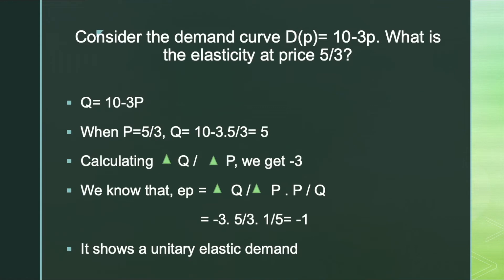Now let's move on to another question. Consider the demand curve QD = 10 minus 3P. What is the elasticity at price 5/3? Here QD is quantity demanded. We can find the quantity demanded: Q = 10 minus 3 × (5/3), which equals 5. So the price is 5/3 and the quantity demanded is 5.